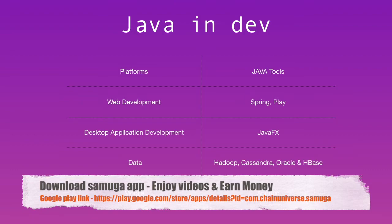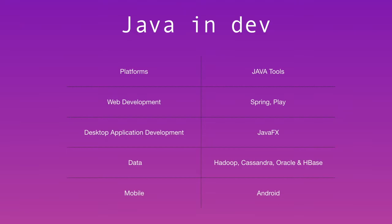When talking about the data world, Java is really in the lead. Big data nowadays is highly associated with Java — large companies like Google, Facebook, and YouTube are also using Java for back-end processing in big data.